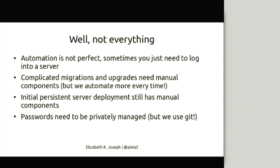We can't handle everything through git commits. We do sometimes need to log into a server — typically to look at a log file, or to interact with MySQL directly. We were also doing a lot of manual work when we initially deploy a system, like someone had to type in OpenStack commands to launch a server. We're moving away from that — trying to automate all the things. We also found we can't really do complicated migrations through git; you can't just update a version number and hope everything goes okay. So migrations and upgrades may need more manual intervention. Passwords also have to be privately managed, but we keep those in Git in a private repository.